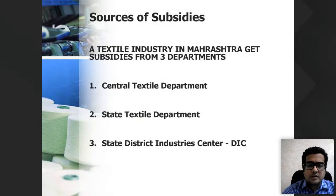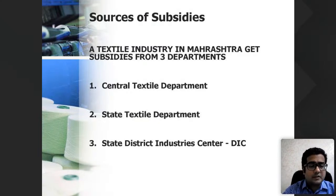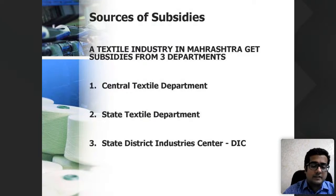What are the sources of these subsidies? If a person is setting up a textile unit in Maharashtra, they can get subsidies from three sources: the central textile department, applicable anywhere in India; the Maharashtra state textile department; and the State District Industry Center, the DIC. A person putting up a textile unit in the Nagpur or Mumbai region can get subsidy from central textile, state textile, as well as the state DIC.